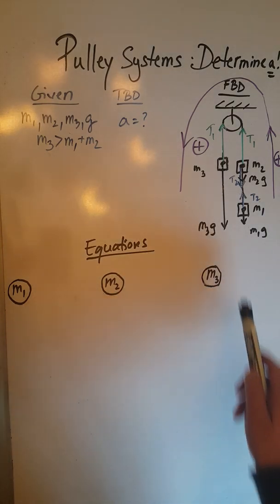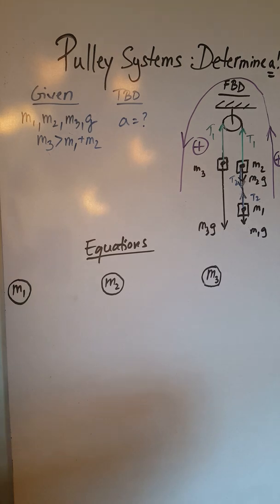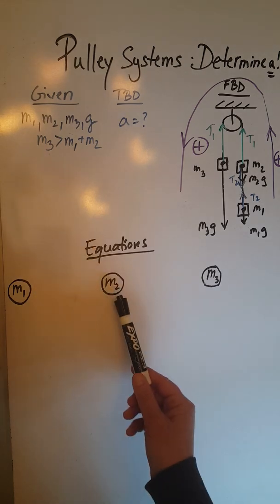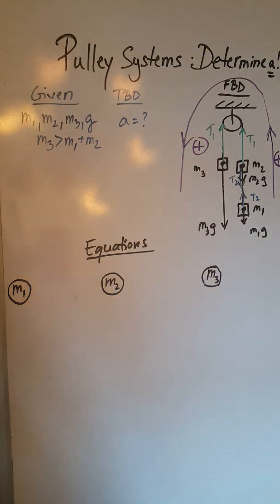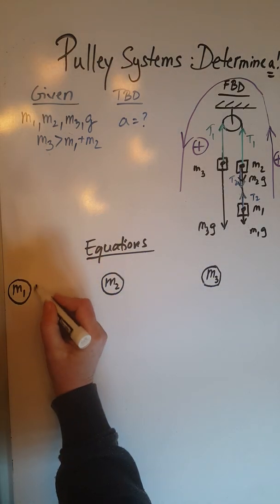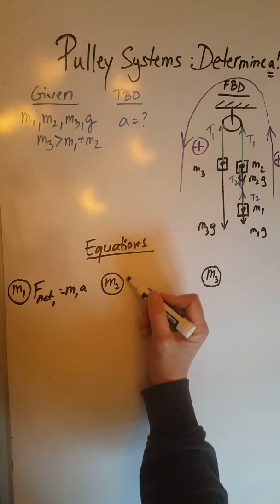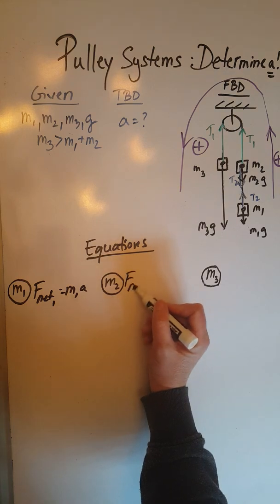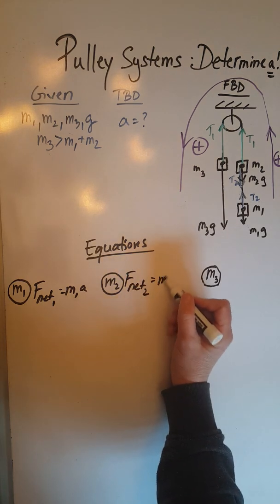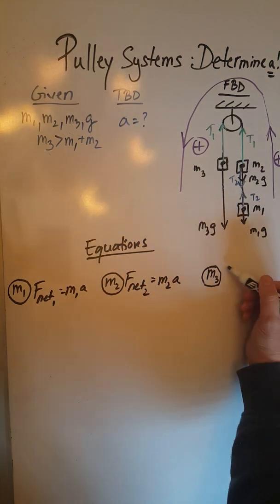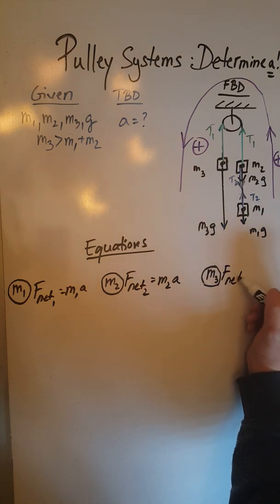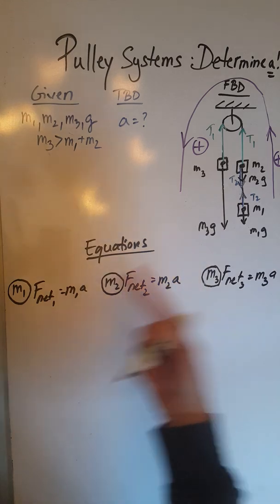Now it's time to move on to writing the equations for the three objects. Remember, all these forces are only one-dimensional, so we don't have F_net_x and F_net_y—we only have F_net. However, we have F_net_1, F_net_2, and F_net_3. For object M1 we have F_net_1 equals M1A. For object M2 we have F_net_2 equals M2A. And for M3 we have F_net_3 equals M3A. The acceleration is the same for all objects in any kind of pulley system.